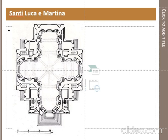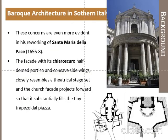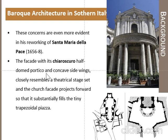The facade of this church features curvilinear elements in its apses — all four apses are curved. This church is called Santa Maria della Pace. It uses more curvilinear geometry and the chiaroscuro effect. A later porch has been extended beyond the church facade in a curvilinear form, with columns in a peristyle arrangement, adding the effect of light and shadow on the facade. The facade, with its chiaroscuro half-dome portico and curved side wings, closely resembles a theatrical stage set.